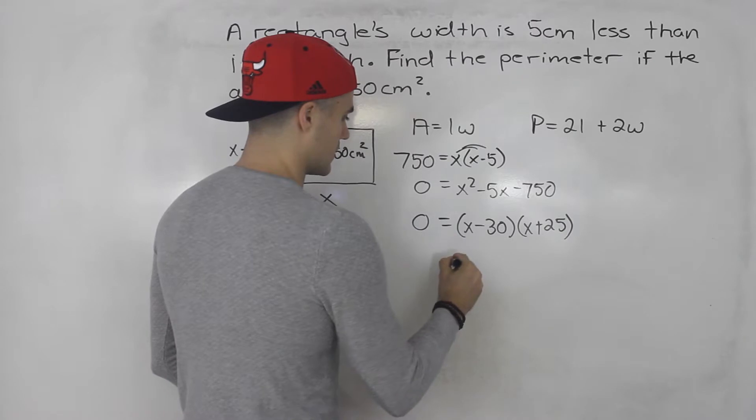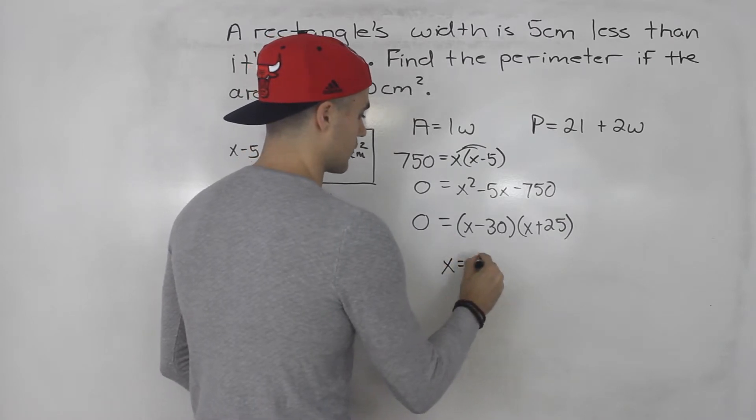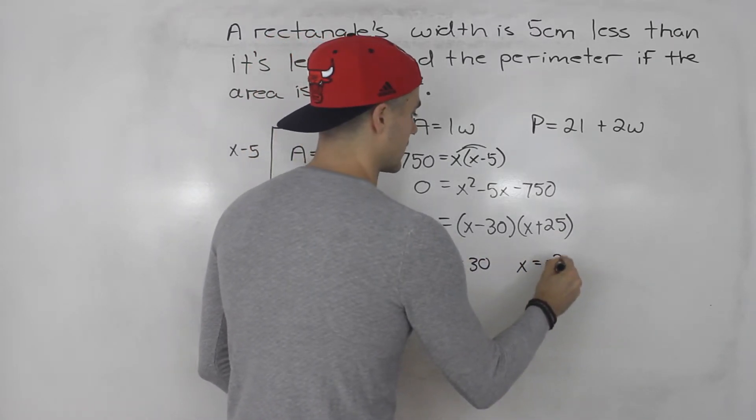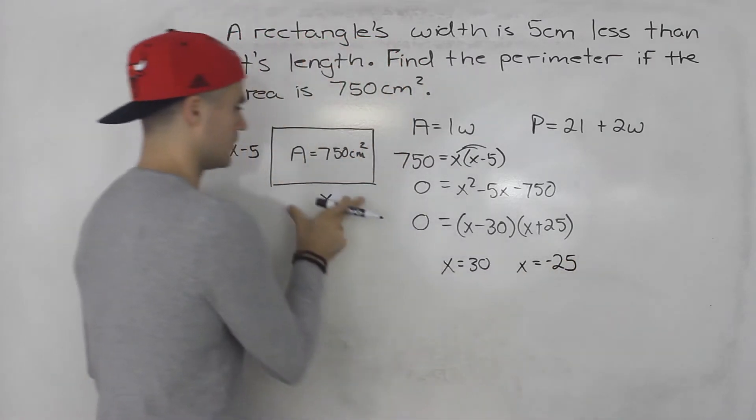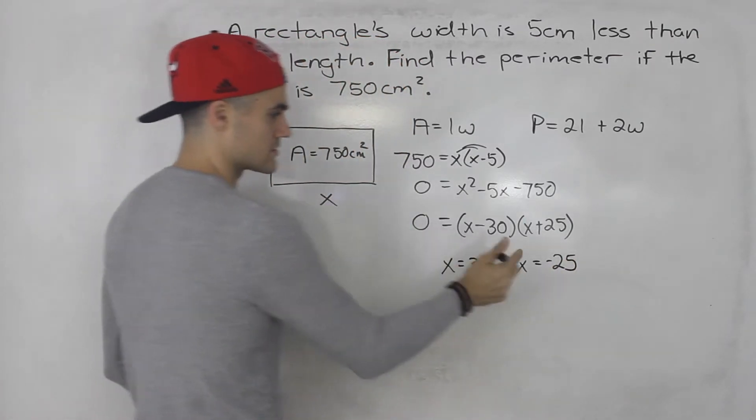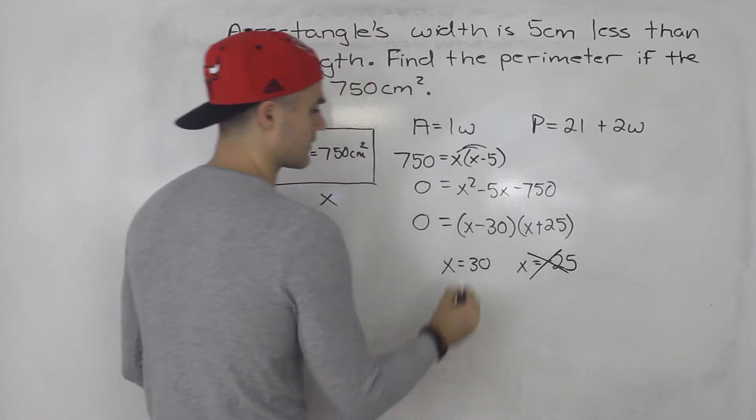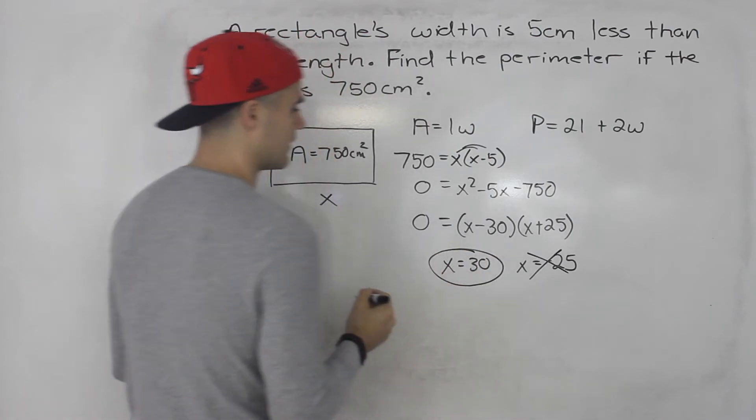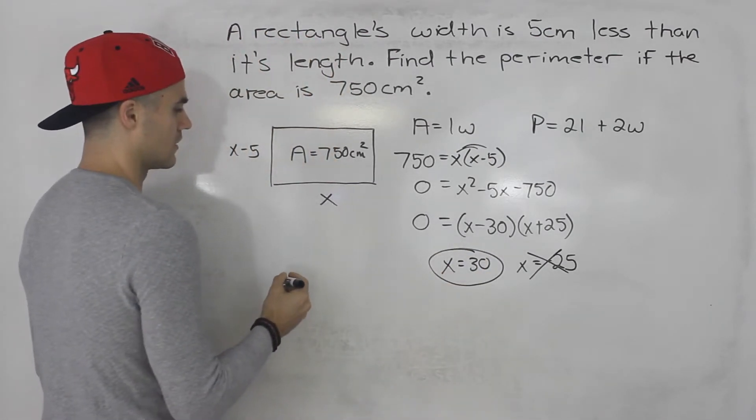So from here we can tell that x is either equal to 30 or x can be negative 25. But we let x be length, so we can't have a negative length, so we know that the length is 30.